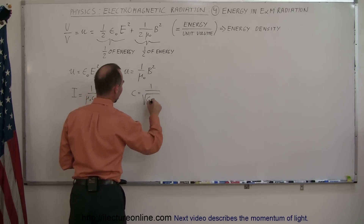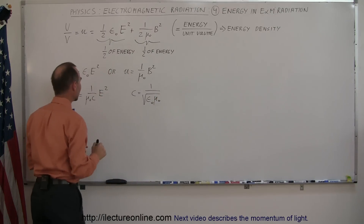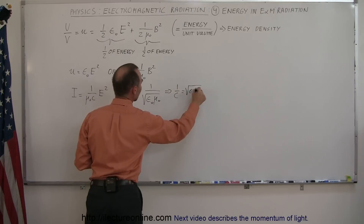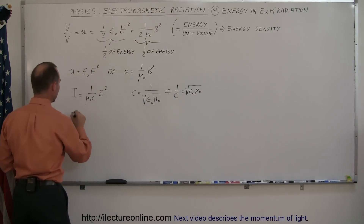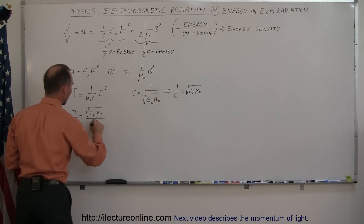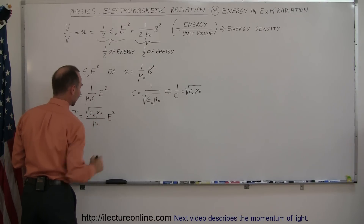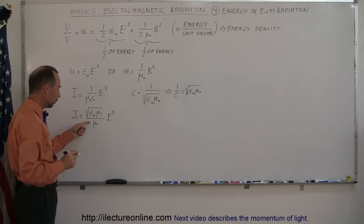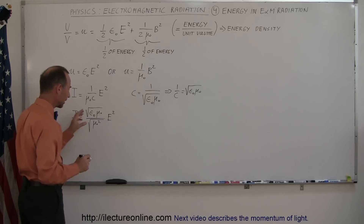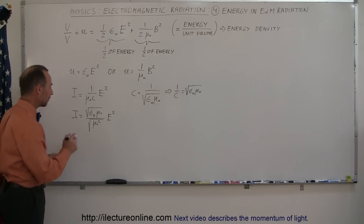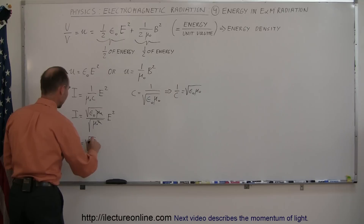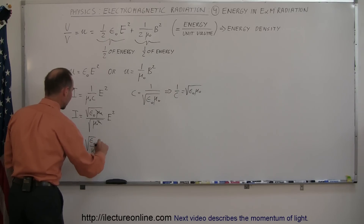Since c equals one over the square root of epsilon-naught times mu-naught, we can write one over c as the square root of epsilon-naught times mu-naught. Substituting that in, the intensity equals the square root of epsilon-naught times mu-naught, divided by mu-naught, times E squared. Squaring the denominator and taking the square root simultaneously, we can cancel terms to get i equals the square root of epsilon-naught over mu-naught times E squared.